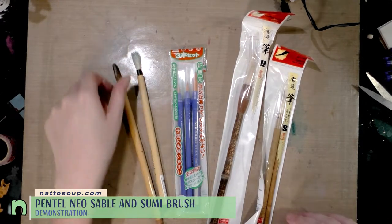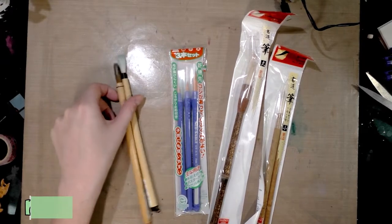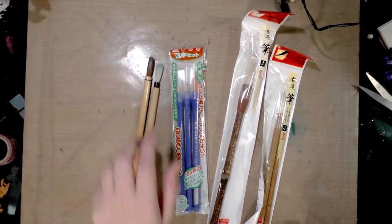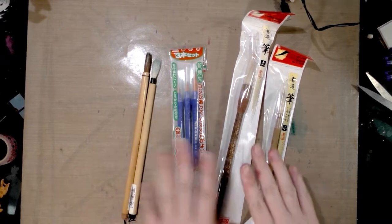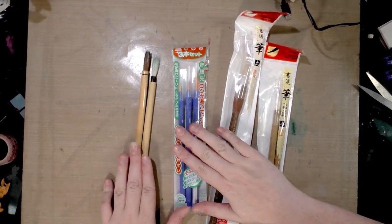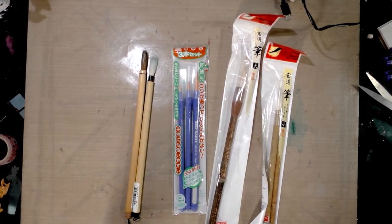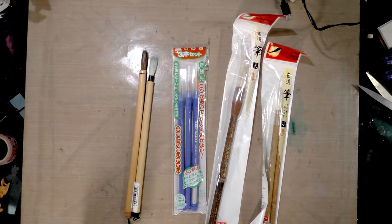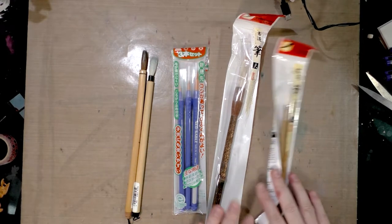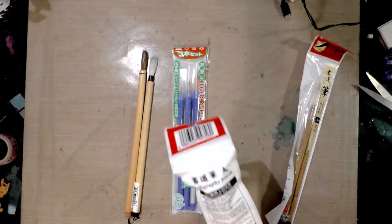I have two from Daiso and then two, this is a Princeton and this is a Yatsutomo. So we've got everything except for the Neo Sable is natural hair and it is either from horse or goat, and I think sometimes they do pig bristles as well.